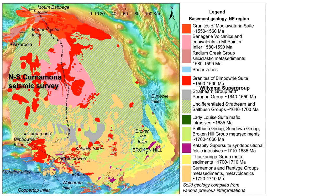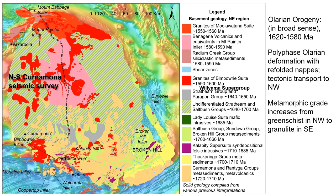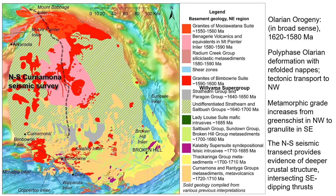The geology of the Curnamona Province is quite complicated, dominated by the Williama Supergroup, which comprises a number of groups and syndepositional magmatic episodes between 1720 and 1640 million years. These were affected by the Olarian Orogeny in the interval 1620 to 1580 million years, involving polyphase deformation with refolded nappes and overall tectonic transport toward the northwest. Metamorphic grade increases from greenschist in the northwest to granulite in the southeast. We have a north-south seismic transect done by Geoscience Australia which provides evidence of deeper crustal structure and intersects a number of southeast-dipping thrust faults.